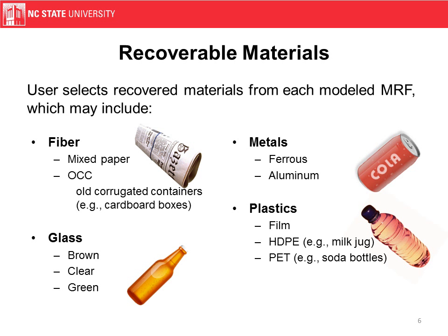What kind of materials can we recover? There are a lot of different variations. Our model is currently set up to handle mixed paper and old corrugated containers (OCC), which is like a cardboard box, as well as metals — ferrous and aluminum cans — glass, and several kinds of plastics. We are aware that there are other kinds of plastics that can be recycled, and some could be easily added, but our current analysis does not include those.